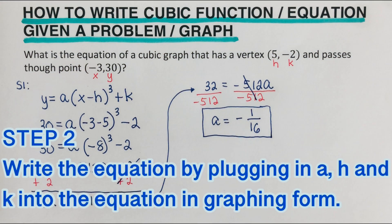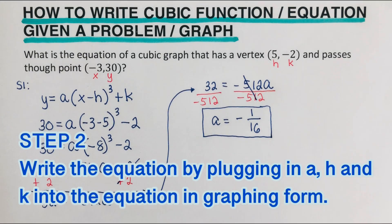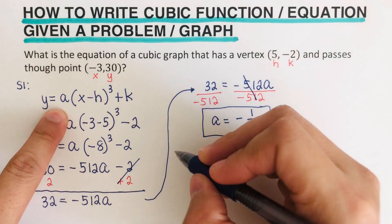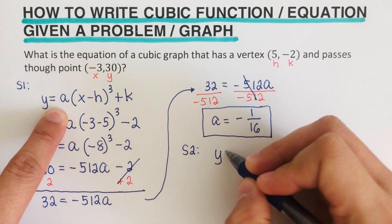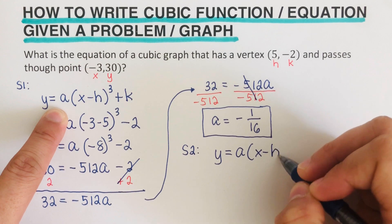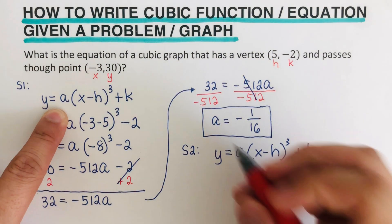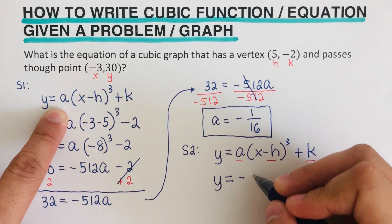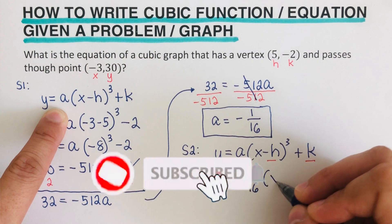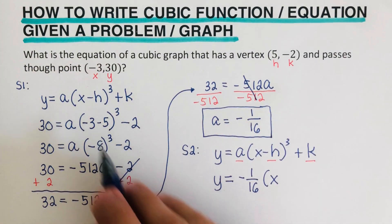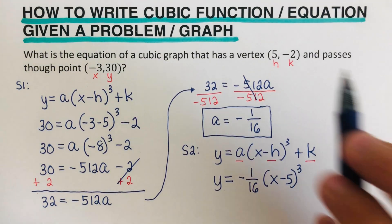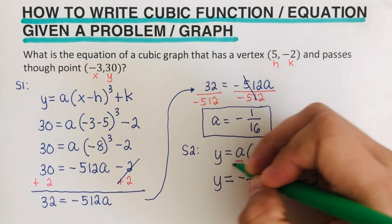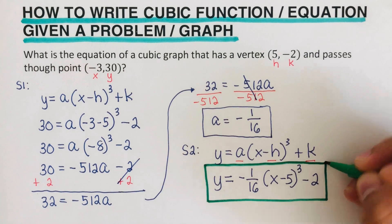The second step is to write the equation by plugging in A, H, and K only into the equation in graphing form. So step 2: Y equals A times parentheses X minus H cubed plus K. Plugging in only A, H, and K, the final equation is Y equals negative 1 over 16 times parentheses X minus 5 cubed minus 2. This is our equation for this problem.